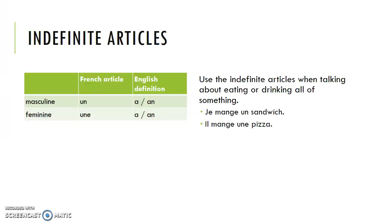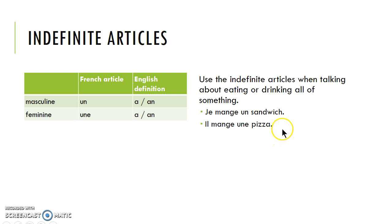The indefinite articles — we're going to use un or une to mean a or an. Use these when you're talking about eating or drinking all of something. So je mange un sandwich, il mange une pizza — I eat a sandwich, he eats a pizza. In both cases we would be talking about eating the whole thing.